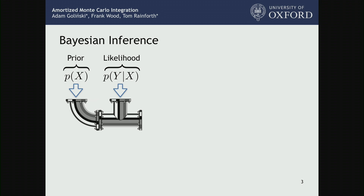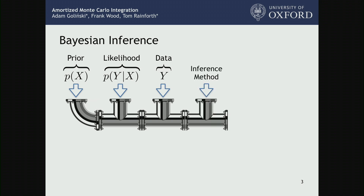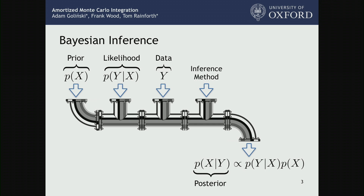The likelihood is p of y given x. Next, we input the actual data, condition on actually observing it, and run some sort of inference method — this step of the pipeline is very related to what we'll do in this talk. Eventually, we get out something called a posterior: the updated belief about the variables x given that we observed data y. We've combined prior expertise with information from data to get an updated model incorporating both.